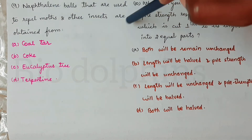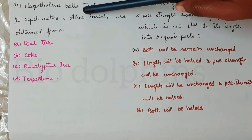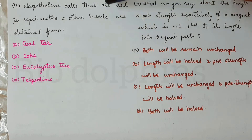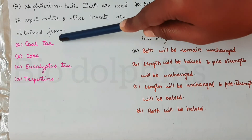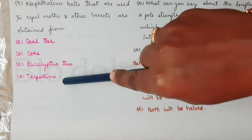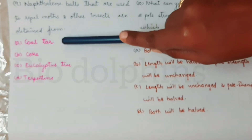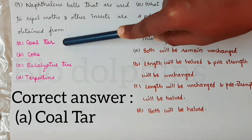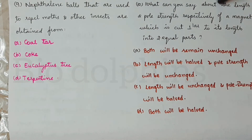Ninth question: naphthalene balls used to repel moths and other insects are obtained from coal tar. Naphthalene balls are a coal tar product. So the correct answer is coal tar.